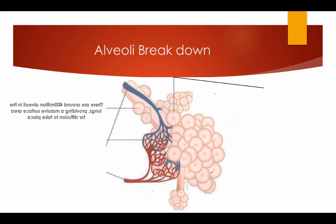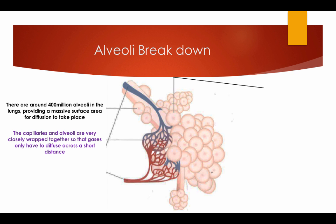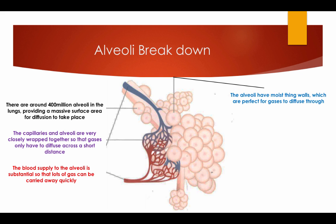Alveoli breakdown. There are around 400 million alveoli in the lungs, providing a massive surface area for diffusion to take place. The capillaries and alveoli are very closely wrapped together, so the gases only have to diffuse across a short distance. The blood supply to the alveoli is substantial, so that lots of gas can be carried away quickly. The alveoli have moist thin walls, which are perfect for gases to diffuse through.